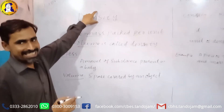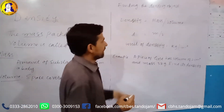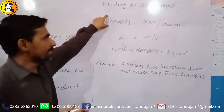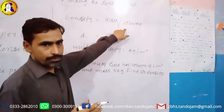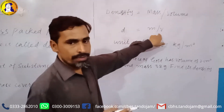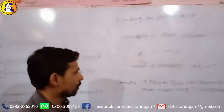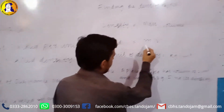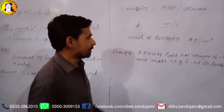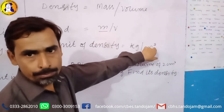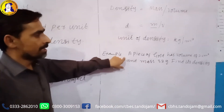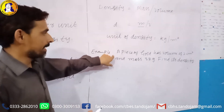The question is: how can we find the density of an object? Density is equal to mass upon volume. The unit of mass is kg, and the unit of volume is meter cube, so the unit of density is kg per meter cube.